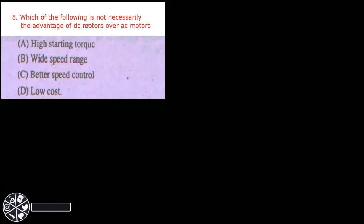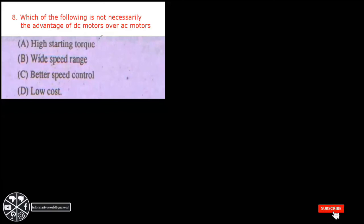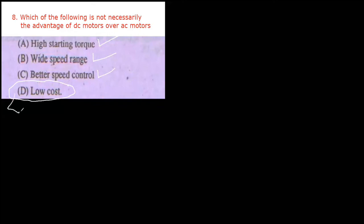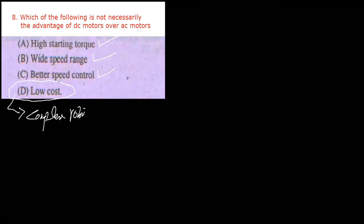Next MCQ: Which of the following is NOT an advantage of DC motor over AC motor — high starting torque, wide speed range, better speed control, or low cost? High starting torque, wide speed range, and better speed control are all advantages of DC motors. Low cost is not an advantage — DC motors are costlier than AC motors due to their complex rotor design and fewer manufacturers. So option D is correct.